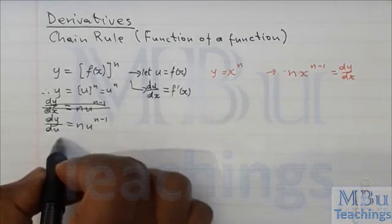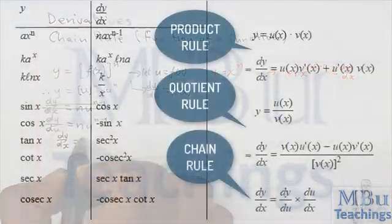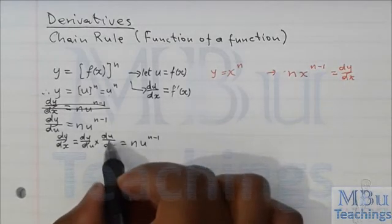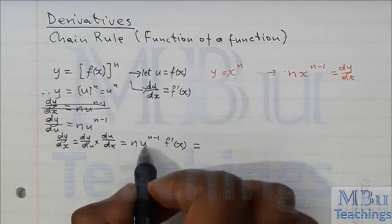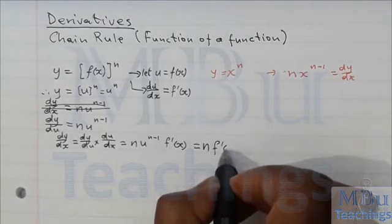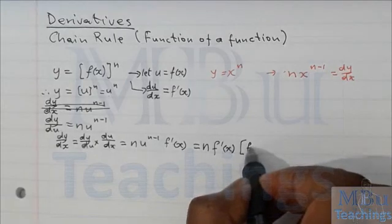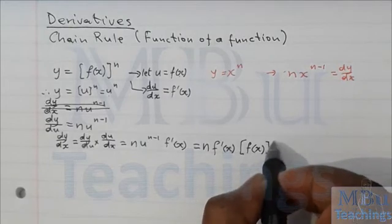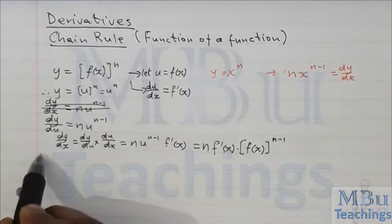Then we move to dy/dx. We have dy/dx equals dy/du times du/dx. As you can see on the formula sheet, dy/du is n·u^(n−1) and du/dx is f′(x). Now let's substitute back in the place of u its value, so we have n times f′(x) times [f(x)]^(n−1). I put square brackets because this u has an exponent — when I substitute f(x) back, I need brackets to cater for the exponent. Okay, this is example number one — I just derived the chain rule formula.